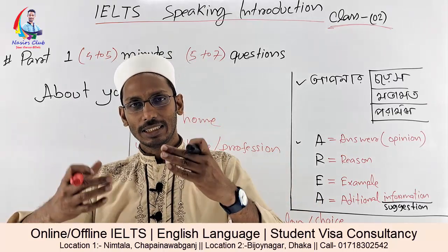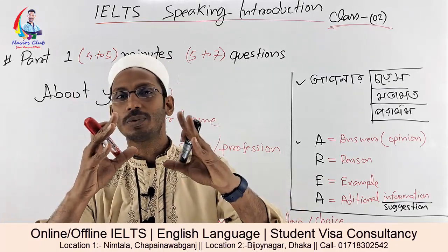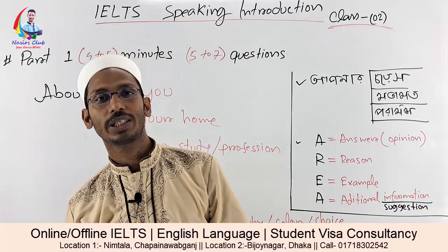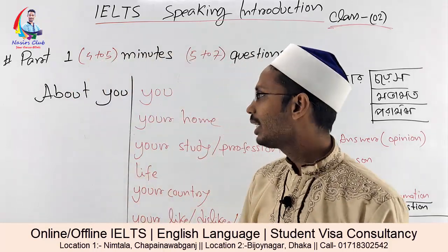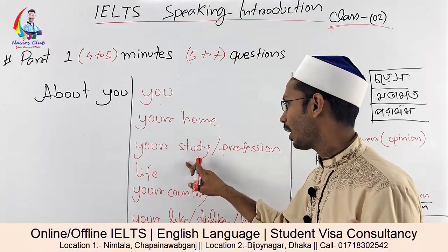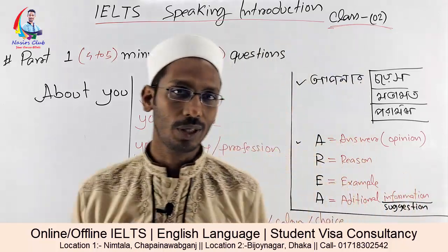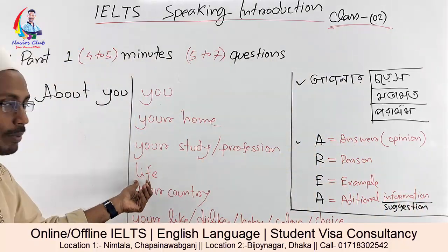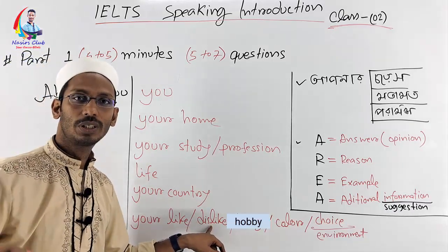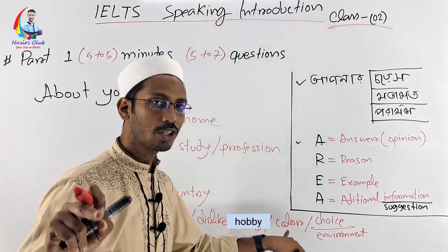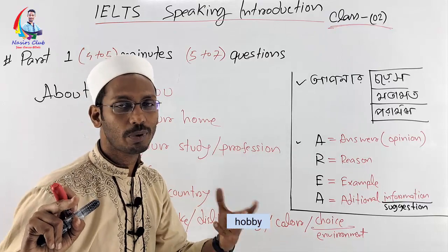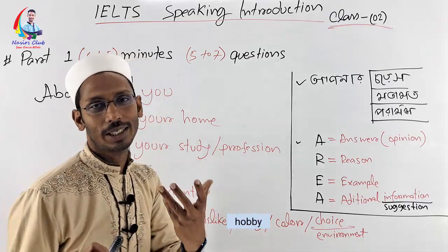Where are you from — this is the 4th question most commonly asked. Then they will ask about your study, profession, life, country — what you like, dislike, or others. They will ask about hobby, colour, choice, or your favourite person or teacher. So these are the same kinds of questions.